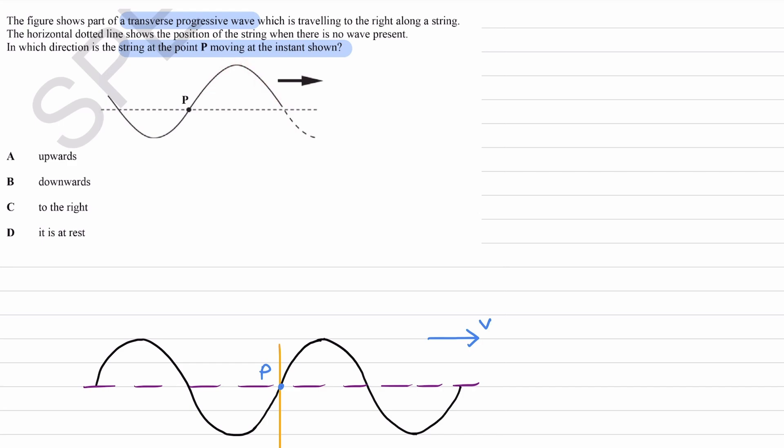But the common mistake here is to think that P will move upwards, because you see a crest after point P. A lot of students think that P will therefore move upwards, but it actually moves downwards.